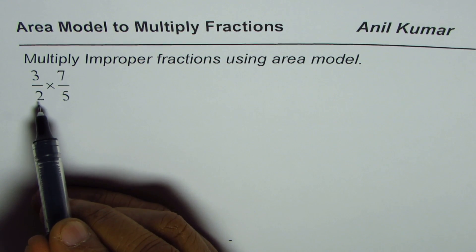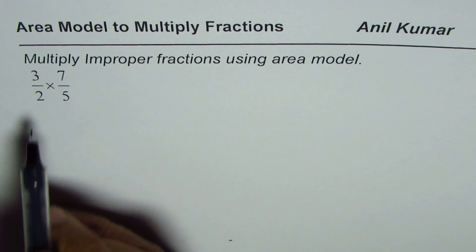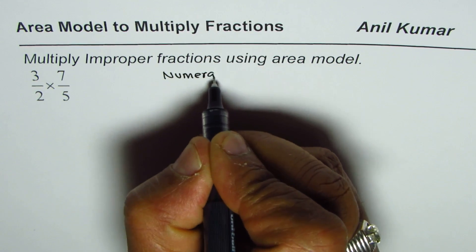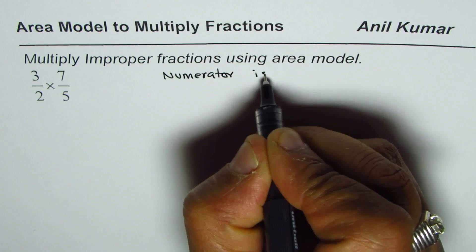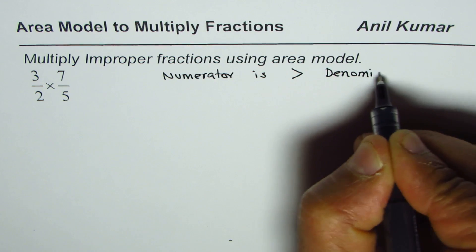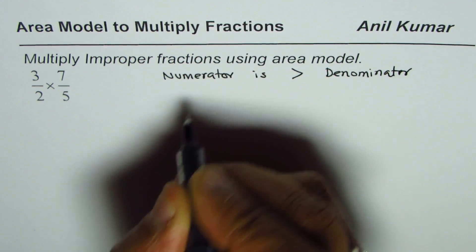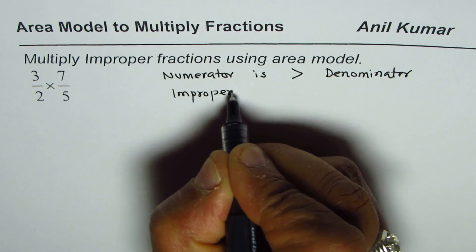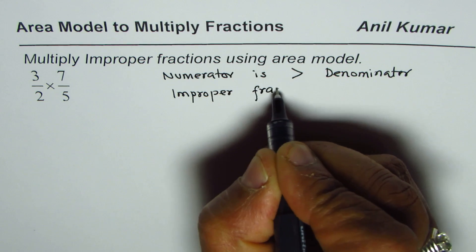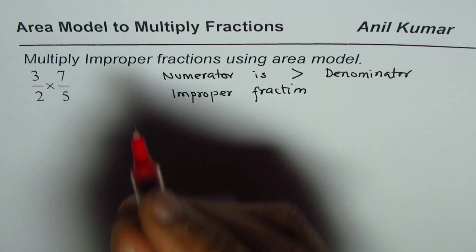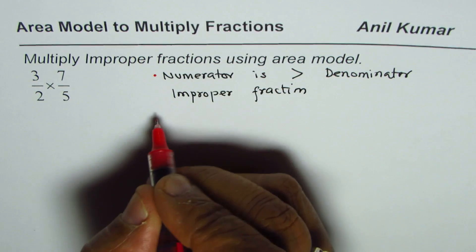We see 3 over 2 is an improper fraction since the numerator is more than the denominator. Since the numerator is greater than the denominator, it is an improper fraction. So we are multiplying improper fractions.